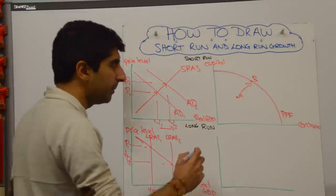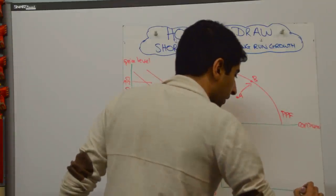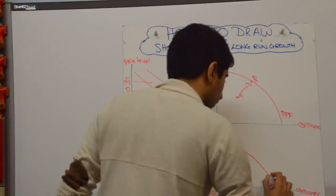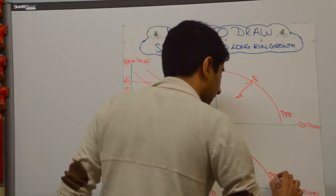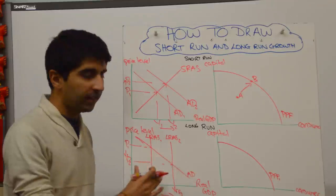And now the PPF. So same axis labeling, capital and consumer. Get your concave PPF drawn like that. Call it PPF1. And all you're looking to do is show that. And how do we show that?